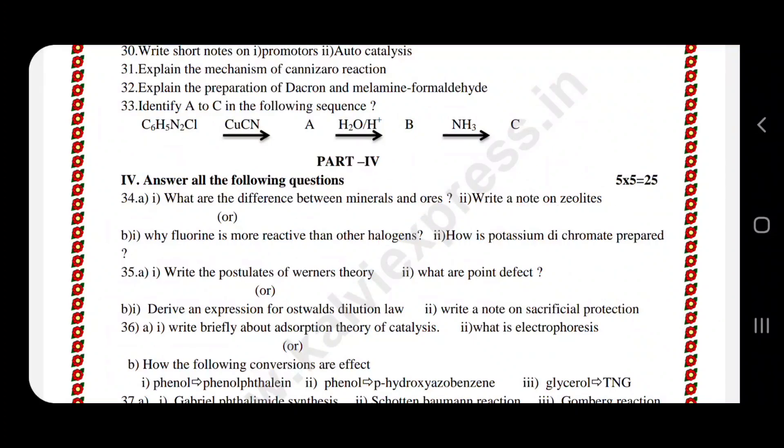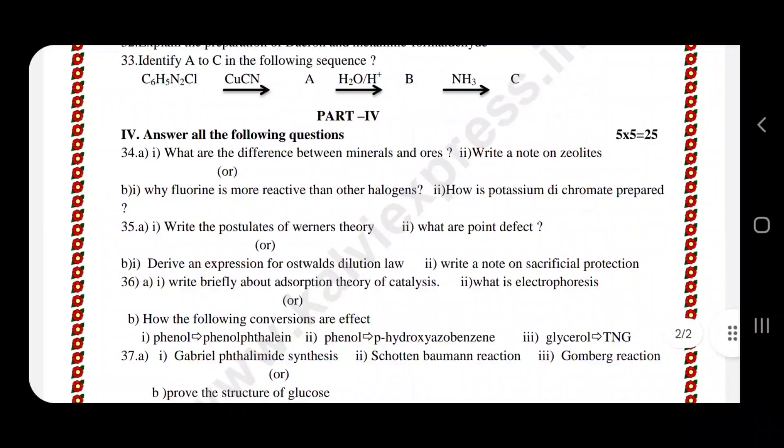This is 3 and 2. And also, why fluorine is more reactive than other halogens. How is potassium dichromate prepared, this is important. Write the postulates of Werner's theory. What are point defects? This is 3 or 2.